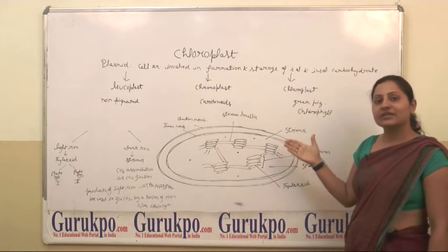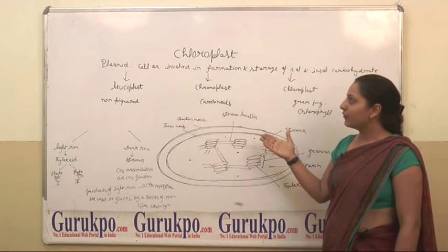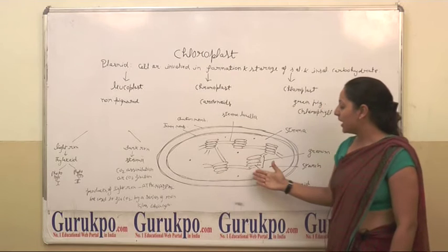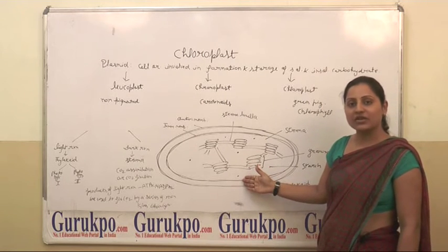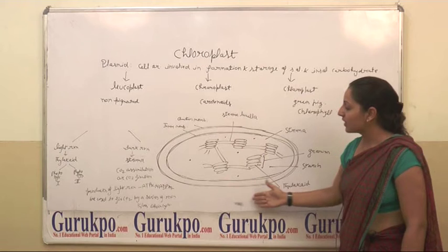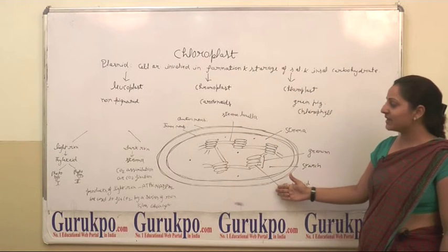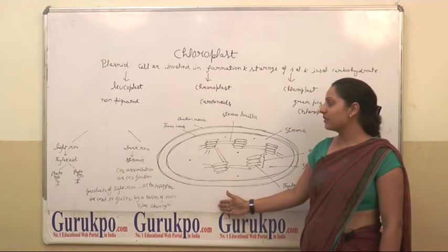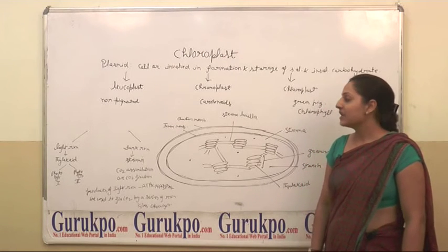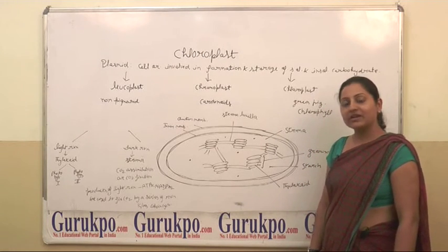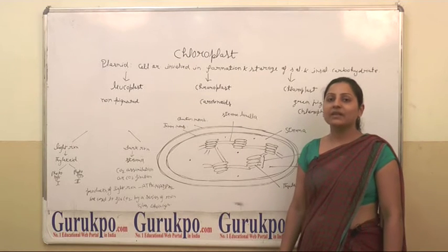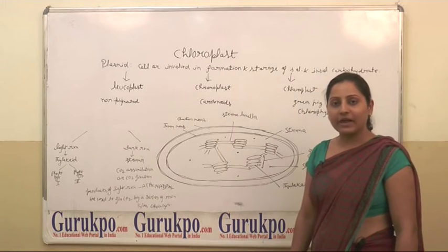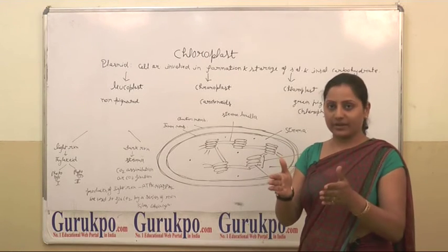The carbohydrate which is synthesized by photosynthesis is stored in the stroma in the form of granules and these are called starch granules. So this is the structure of chloroplast. Basically three membrane systems are found here: the first membrane system makes the outer membrane, the second membrane system makes the thylakoid membrane, and the third membrane system makes the stroma lamellae which joins two grana.